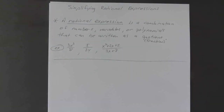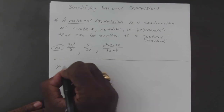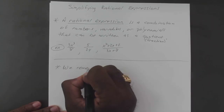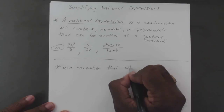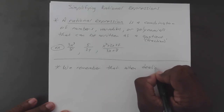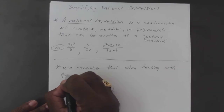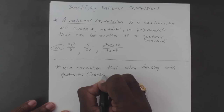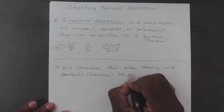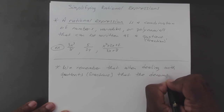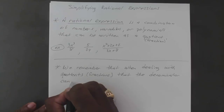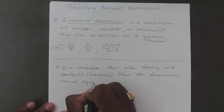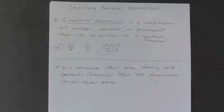Now just like with any fraction, we know that denominators cannot equal zero — the planet will blow up if that ever happens. So we remember that when dealing with quotients or fractions, the denominator cannot equal zero. The same rule applies here: your denominator can never equal zero.